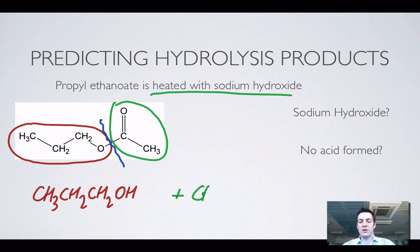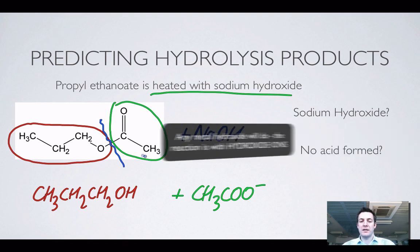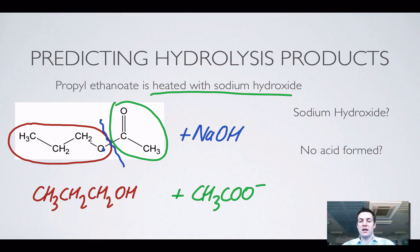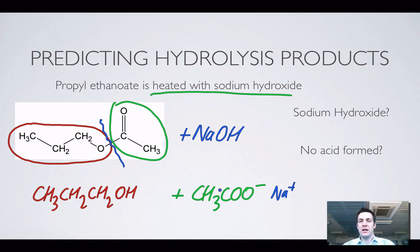I don't make ethanoic acid in this reaction — I make the ethanoate ion. So if I mixed this with sodium hydroxide, I'm going to be putting OH back in here: this gets an O, this gets the H, and then we've got this ion left over with the sodium ion. So that's the equation. Let's explain why we make the ethanoate ion instead of the ethanoic acid.